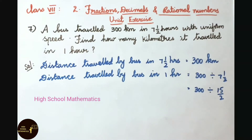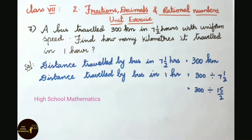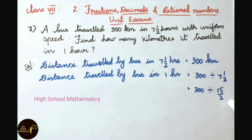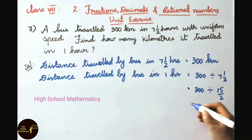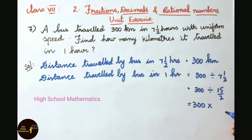Distance traveled by bus in seven and a half hours equals 300 kilometers. Distance traveled by bus in one hour equals 300 divided by 7 and 1/2. We convert the mixed fraction to improper: 2 sevens are 14, 14 plus 1 is 15, so we get 300 divided by 15/2. Using the division symbol, we write the reciprocal of 15/2 as 2/15.